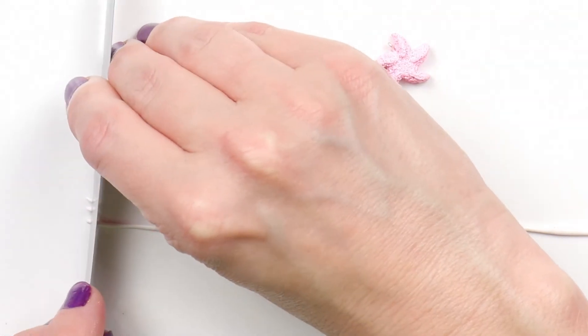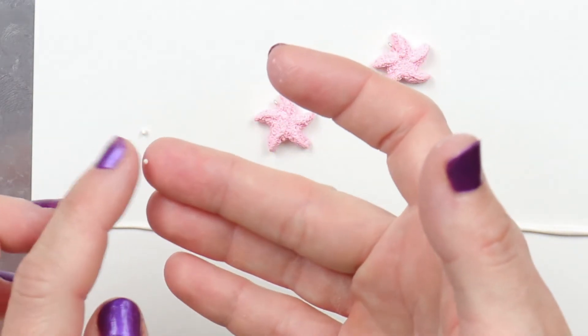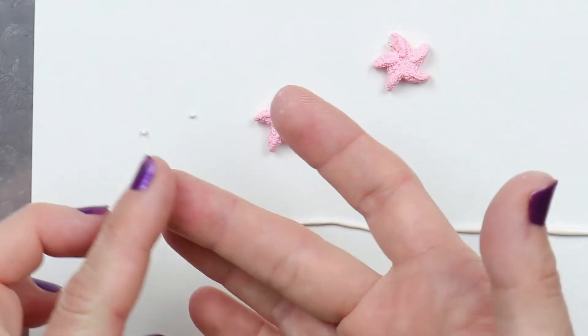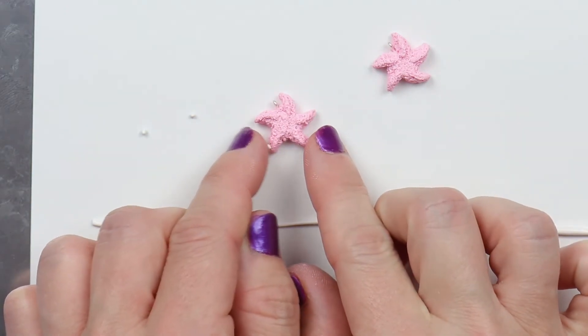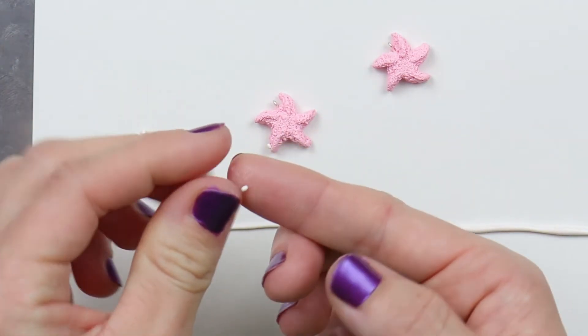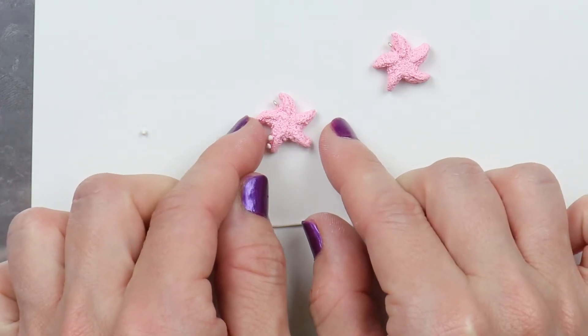Using the rolled out pink clay, cut off itty bitty pieces and roll them into balls. I'm placing three balls on each starfish limb.